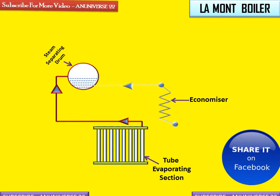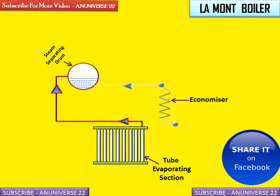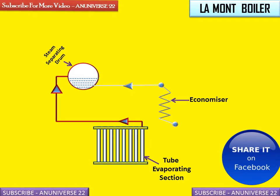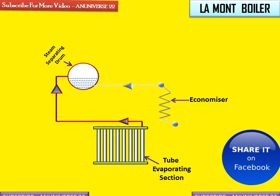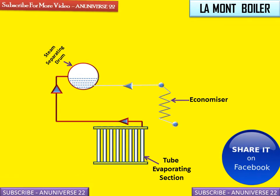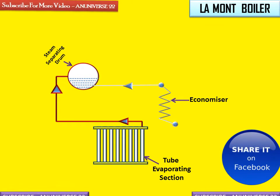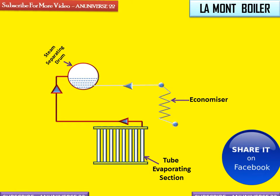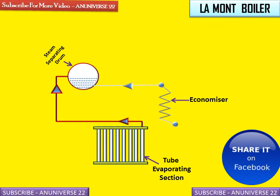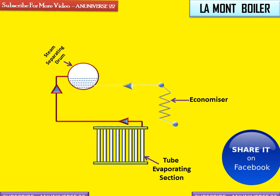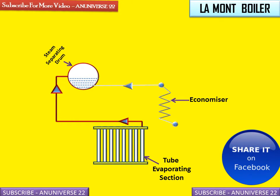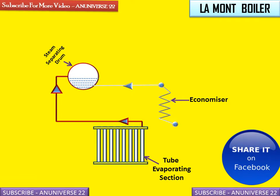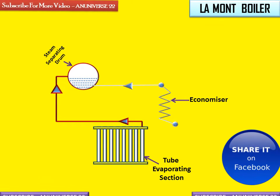This is the steam separating drum. The steam separator is situated outside the boiler. The mixture of water and steam from the evaporator tube is sent to the steam separator, where it separates the steam and sends it to the super heater. The remaining water is sent back to the economizer.